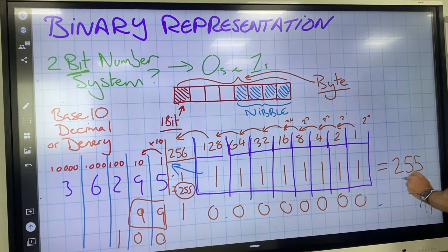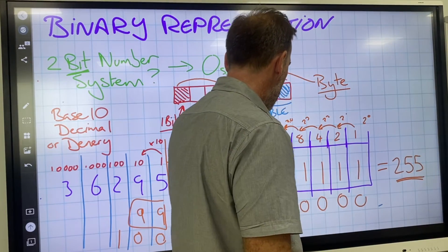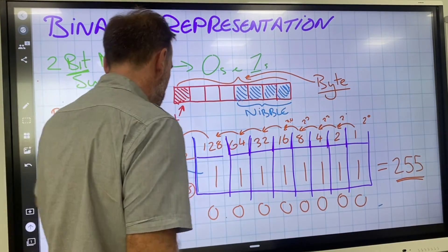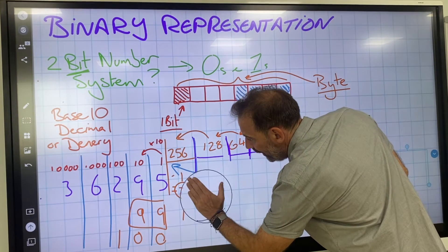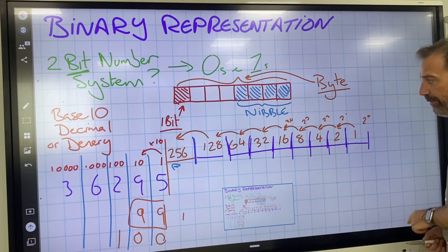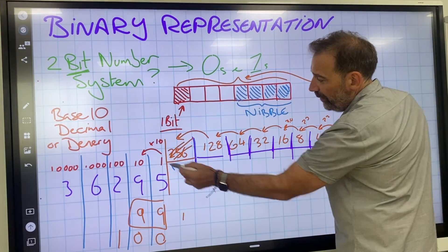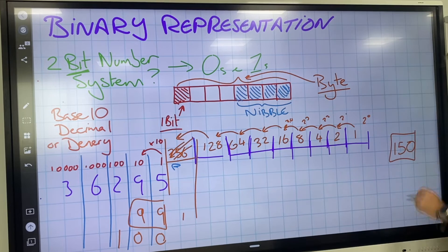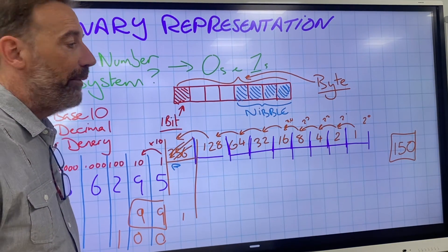So if we've got all ones and we add 1 to it, we get the next number in the sequence. Now we're going to go back the other way — I'll give you a denary number and I want you to convert it into a binary number using the 8-bit register. I can't go bigger than 255. Let's keep it simple — let's have the number 150. What would 150 look like as a binary number in an 8-bit register?